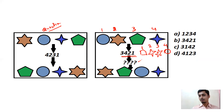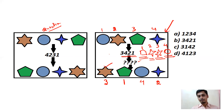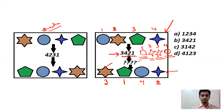Star is numbered 3, pentagon is 1, circle is 4, and the six-pointed star is 2. So you write 1, 2, 3, 4 on top of the symbols, rewrite them in the given arrangement, then write 1, 2, 3, 4 over the result and map to the answer. The answer is 3, 1, 4, 2 — option C.